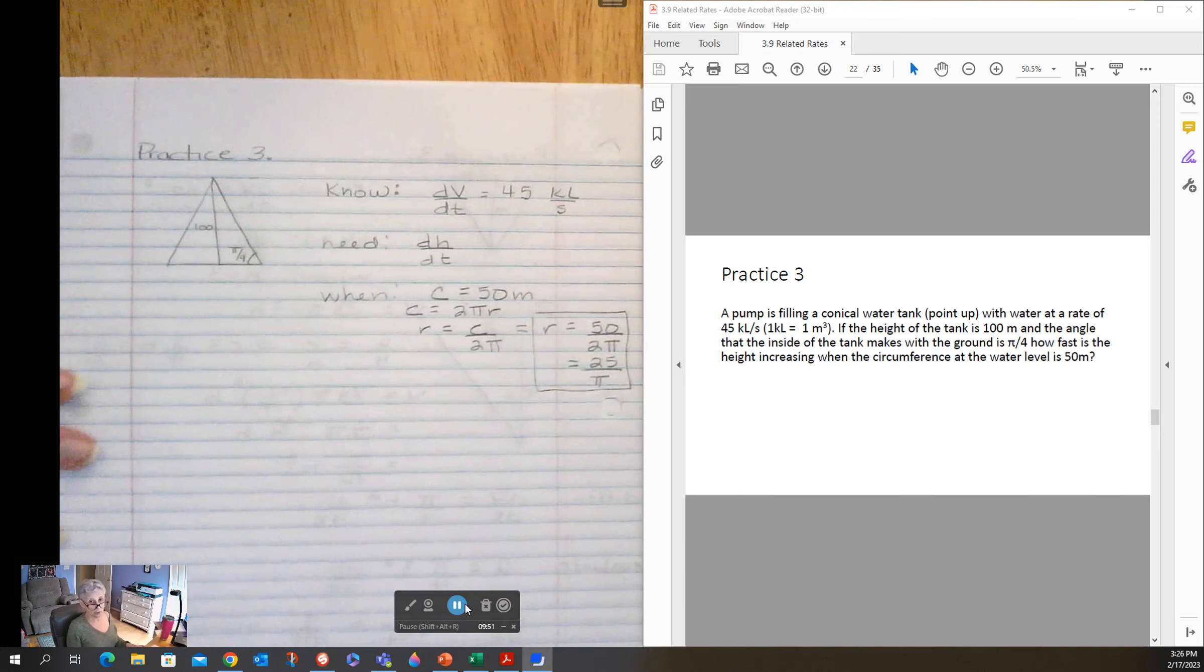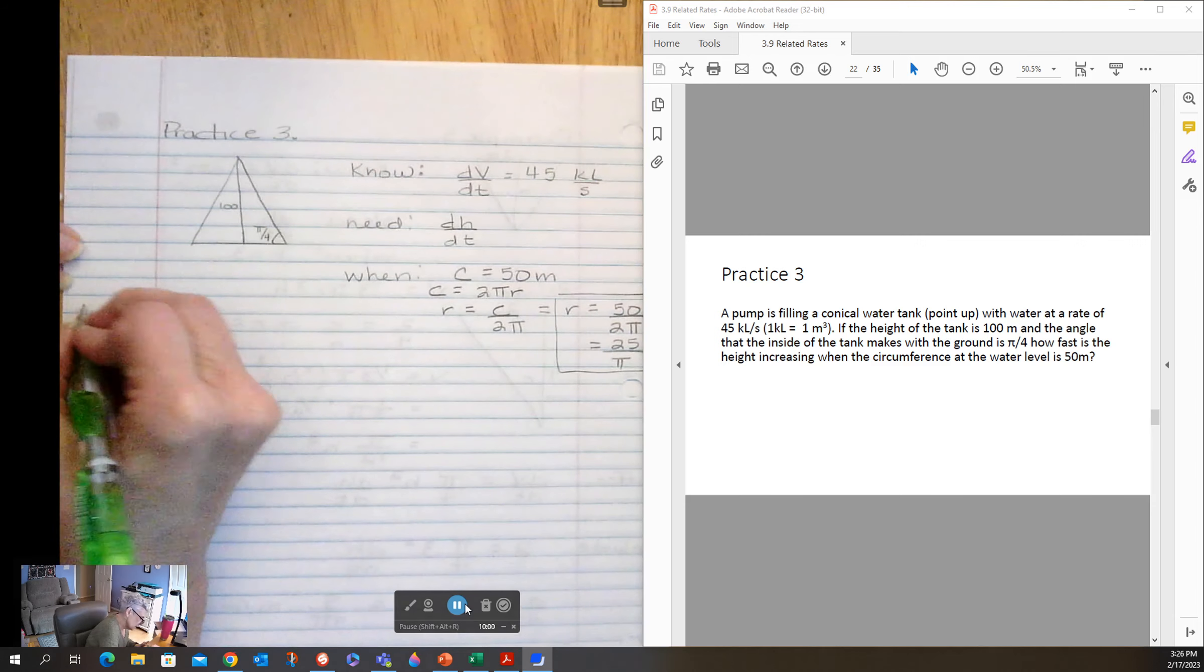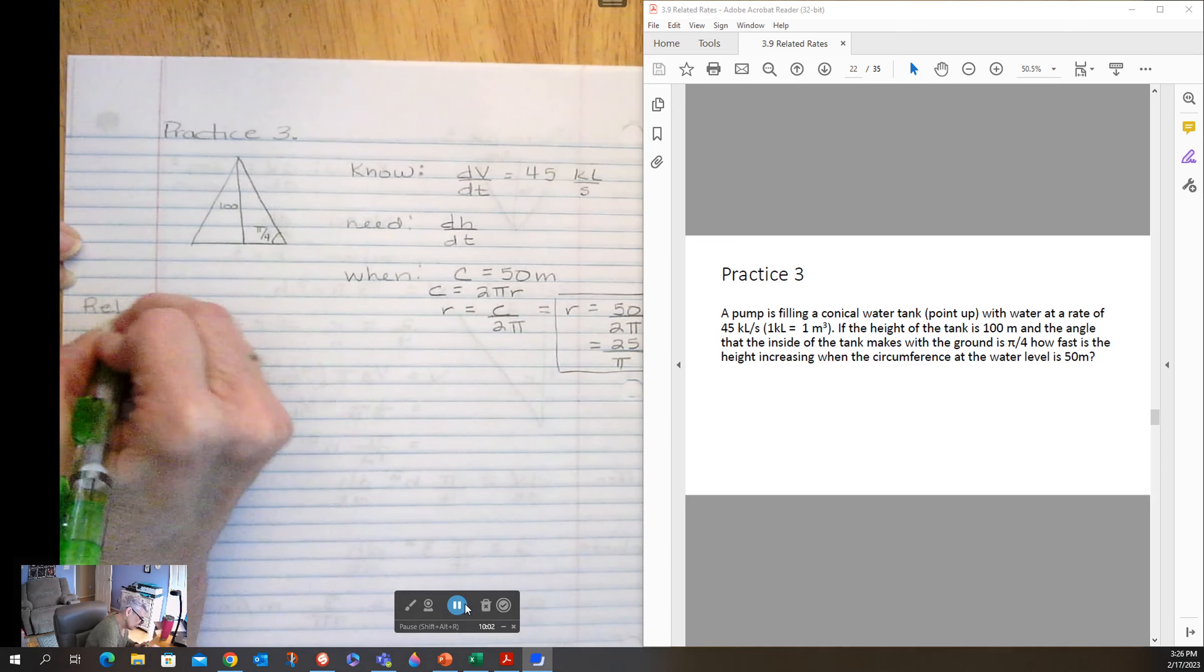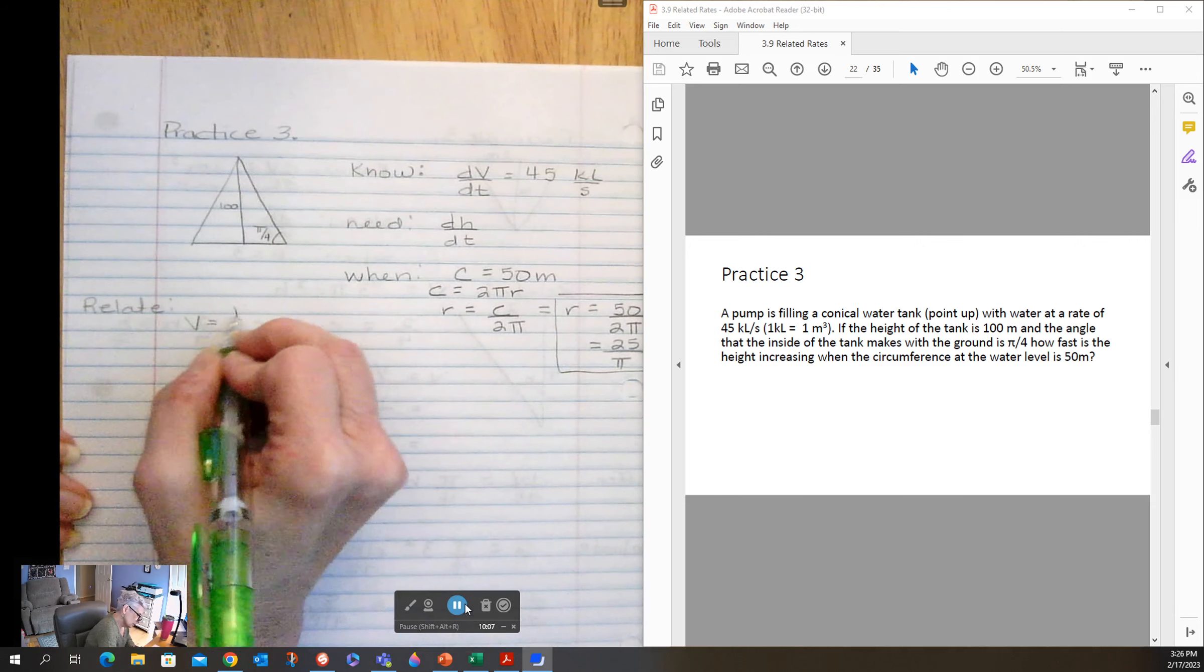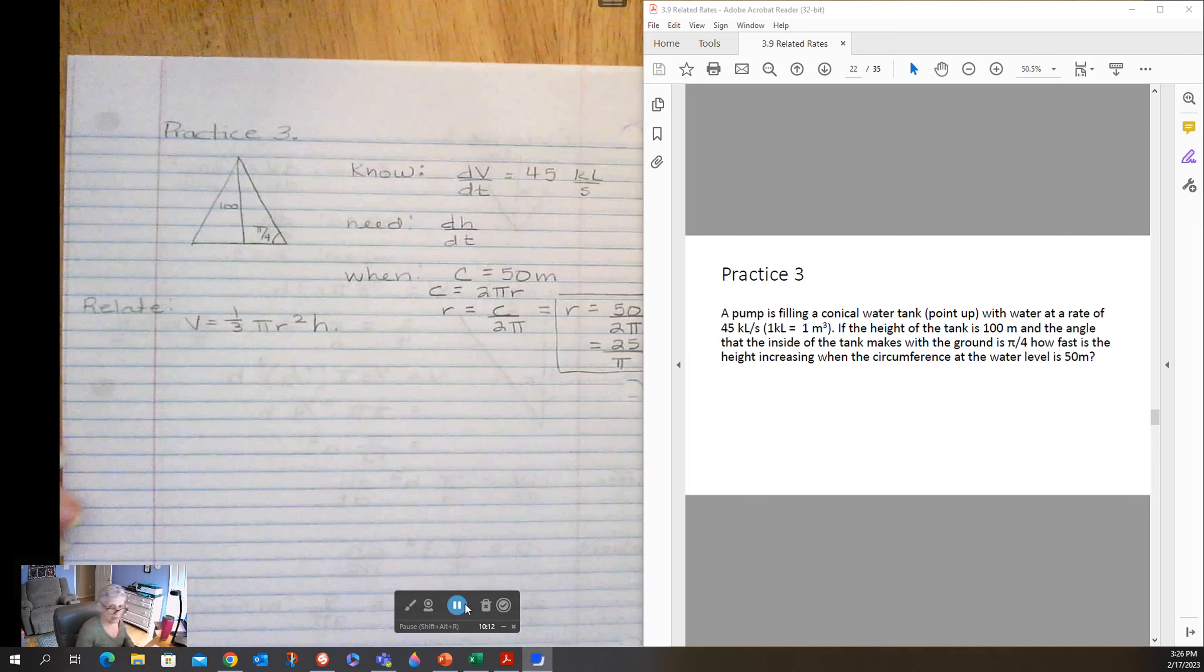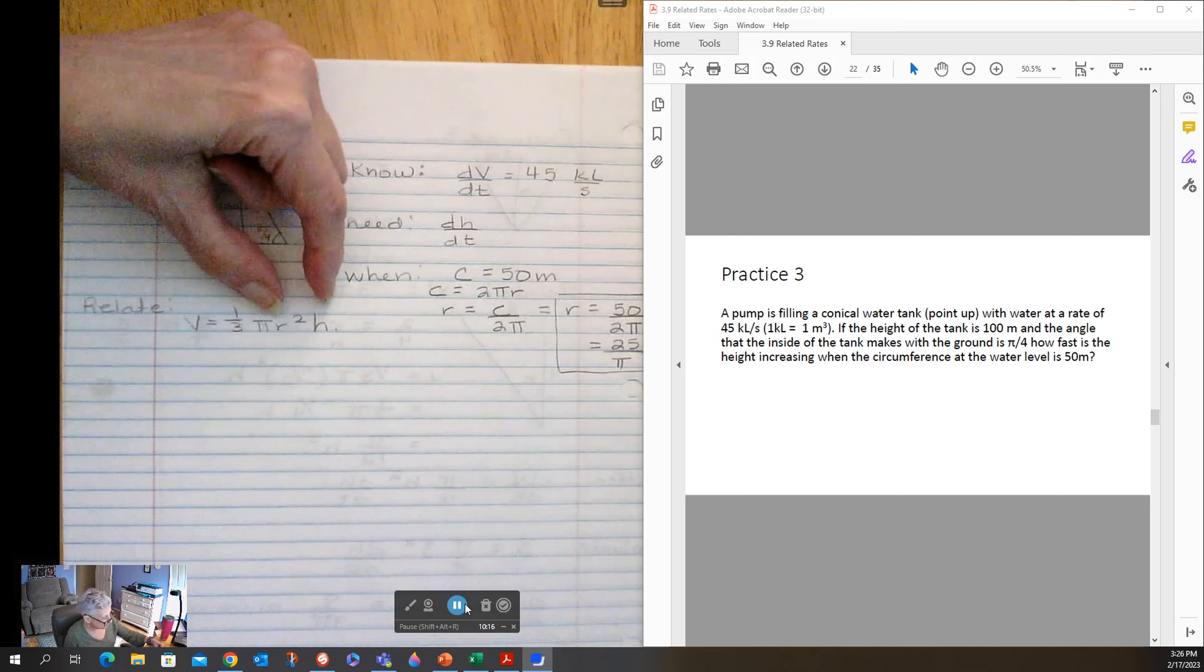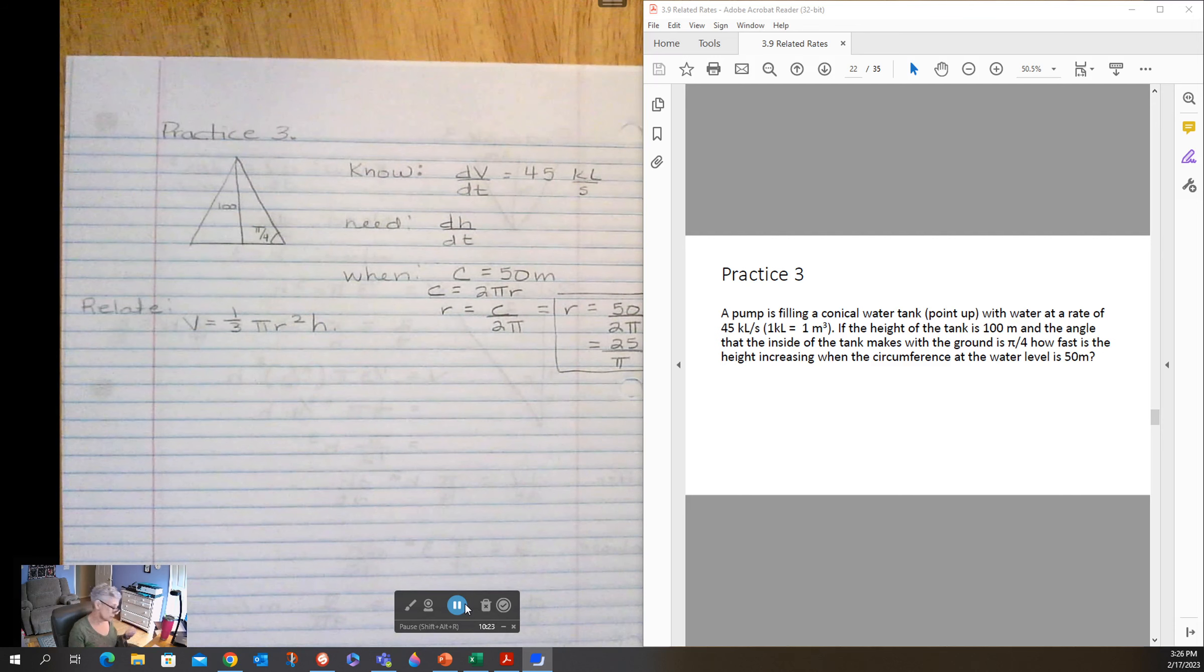I think that'll be a little more useful than the circumference, but you know how to get to radius from circumference because that's really easy. So the volume of a cone is one-third pi r squared h. Again, I have two variables here. My goal is dH/dt, so I need to come up with a relationship between these variables.